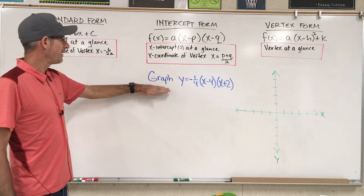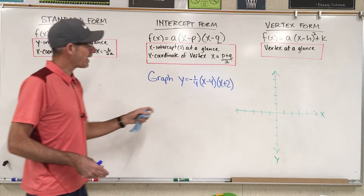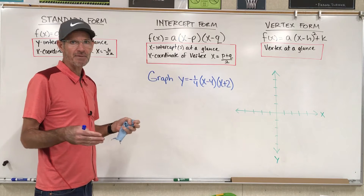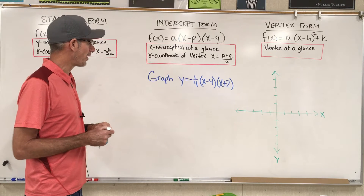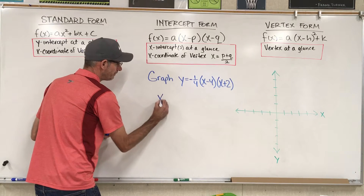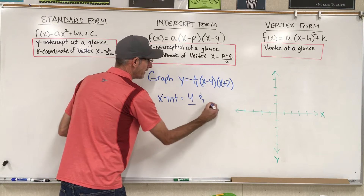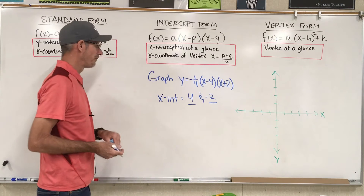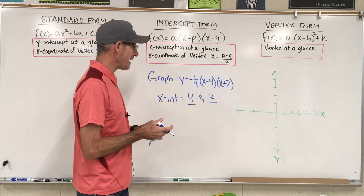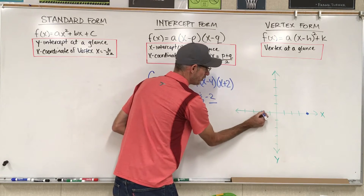We want to graph y equals negative one-fourth times the quantity (x minus 4) times the quantity (x plus 2). The first thing I'm going to do is identify what the x-intercepts are. My x-intercepts are 4 and negative 2. So my parabola is going to cross the x-axis at positive 4 and at negative 2.